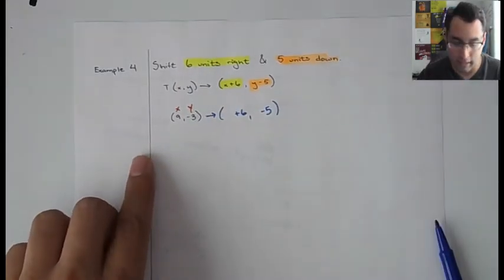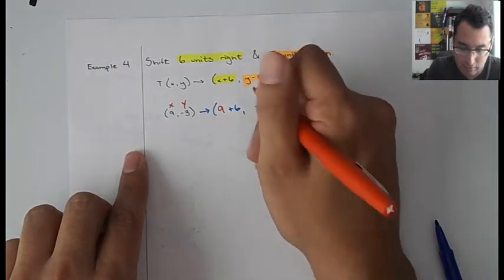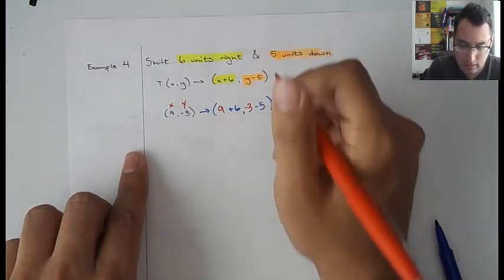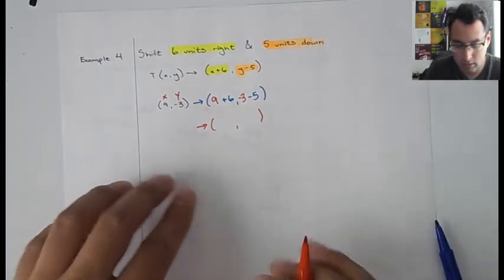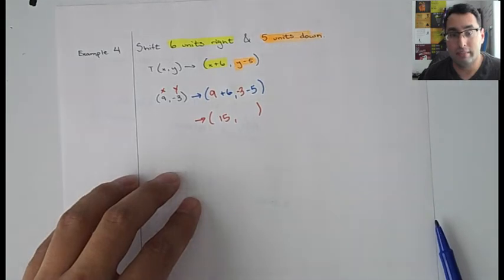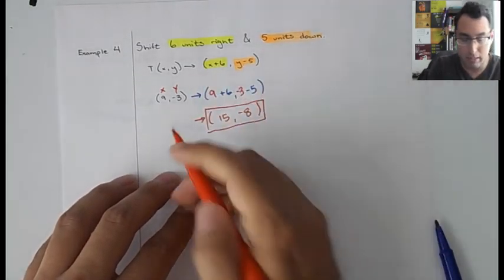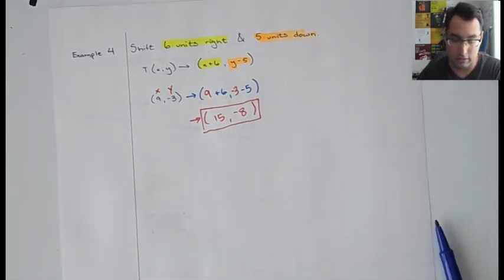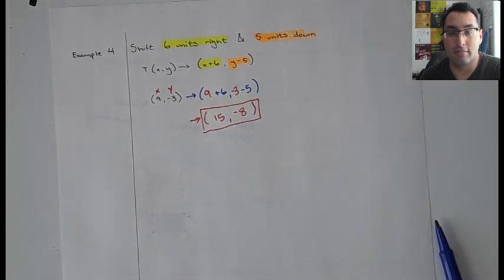It's just more practice. We're going to have nine in for x and negative three in for y. Let's simplify this. Okay. Nine plus six is 15. And negative three minus five is negative eight. Alright guys, that's pretty much it. We get from our pre-image to our image shifting six units right and five units down. Alright guys, let me know if you guys got any questions. See ya. Bye.